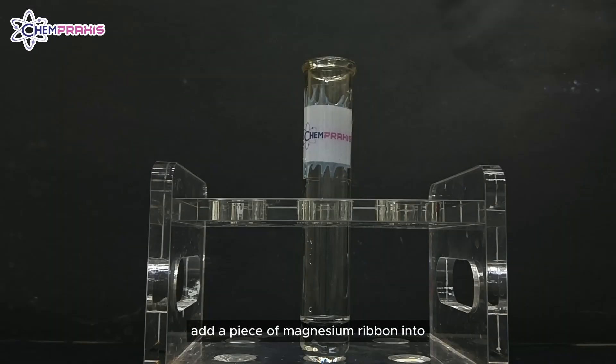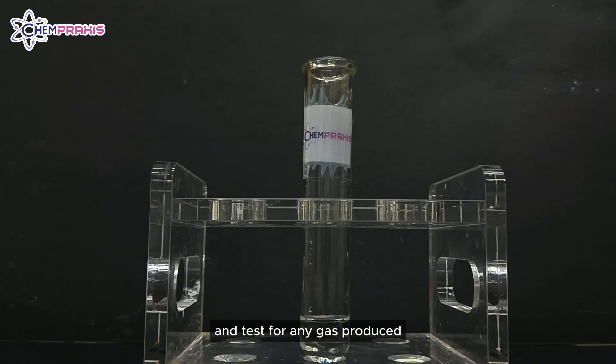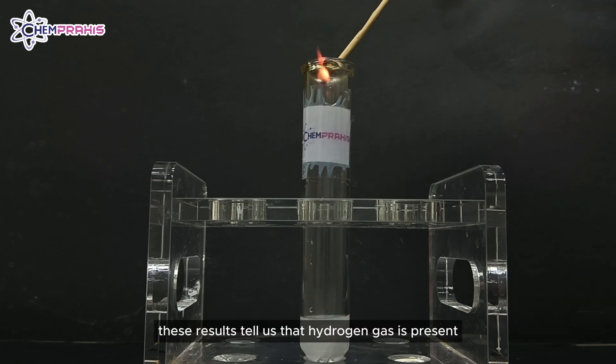Add a piece of magnesium ribbon into the second portion of solution J and test for any gas produced. We can see fizzing and lighted splint pops. These results tell us that hydrogen gas is present.